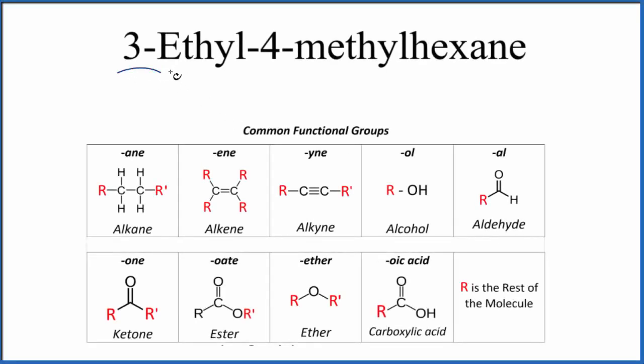Let's write the structure for 3-ethyl-4-methylhexane. When we see this ending here, A-N-E, that tells us we're going to have an alkane. We're going to have carbons that are all single bonded and surrounded by hydrogens.